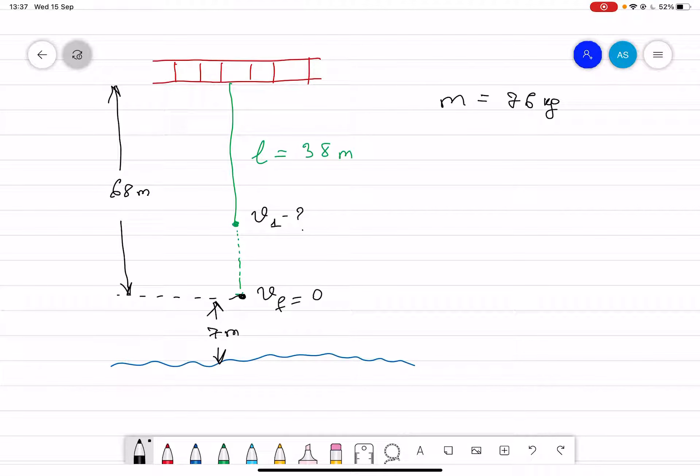A 76 kilogram bungee jumper tied to a 38 meter long cord leaps off a bridge whose deck is 68 meters above the water. He falls to seven meters above the water before the bungee cord pulls him back up.